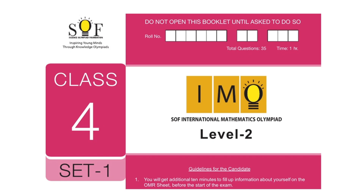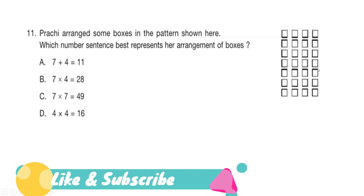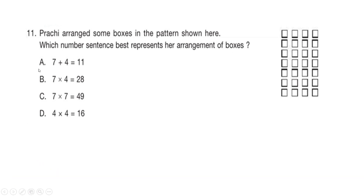Today we are going to do the IMO Level 2 paper for Class 4, and we are focusing on Set 1. Next question: Prachi has arranged some boxes in the pattern shown here. Which number sentence best represents her arrangement of boxes? Is it option A: 7+4=11, option B: 7×4=28, option C: 7×7=49, or option D: 4×4=16? Your time starts now.